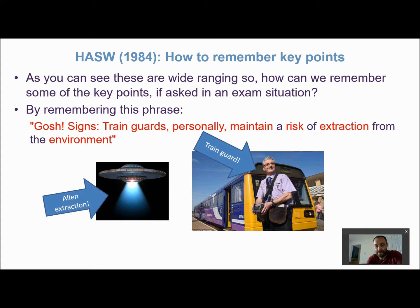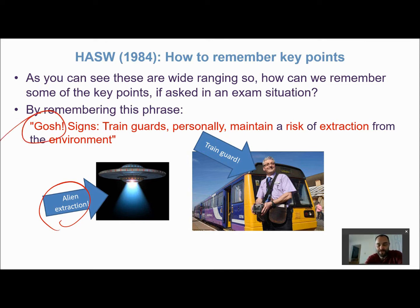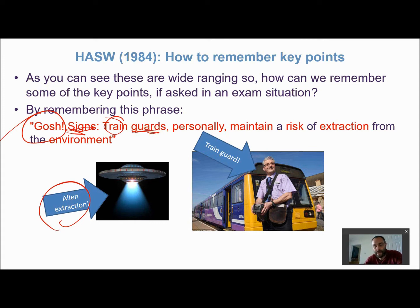In the mnemonic: 'Gosh' — or COSH — relates to the acronym COSHH. Signs refers to signage. Train refers to training for our workers and employees. Guards relates to the physical guards that need to be on machines to ensure people don't get injured.